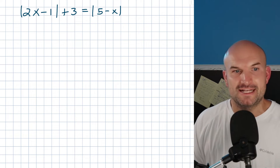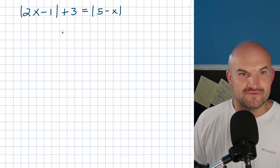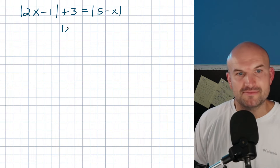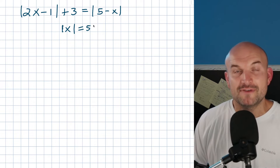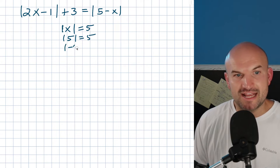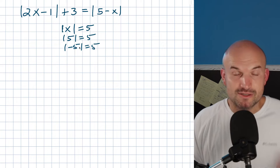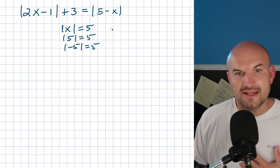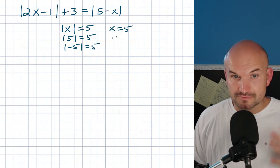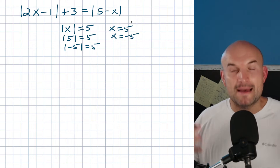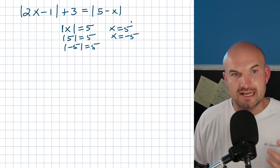What we need to understand is the basic concept of absolute value. For example, the absolute value of X equals five. We know the absolute value of five is five, and the absolute value of negative five is also five. So we have to make sure we consider that X could equal positive five and X could equal negative five — we have to include both the positive and the negative case.